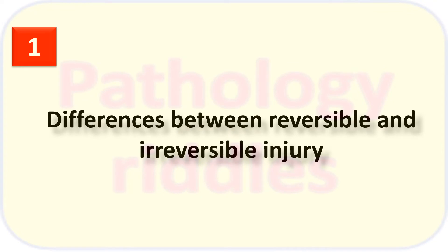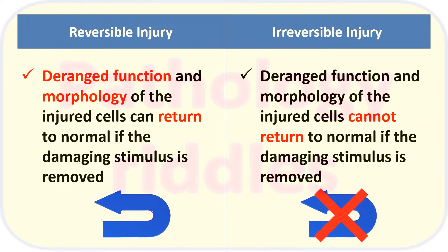Question number one: what is the difference between reversible and irreversible injury? Reversible injury is a derangement of function and morphology of the injured cell which can come back to normal if the stimulus is removed.